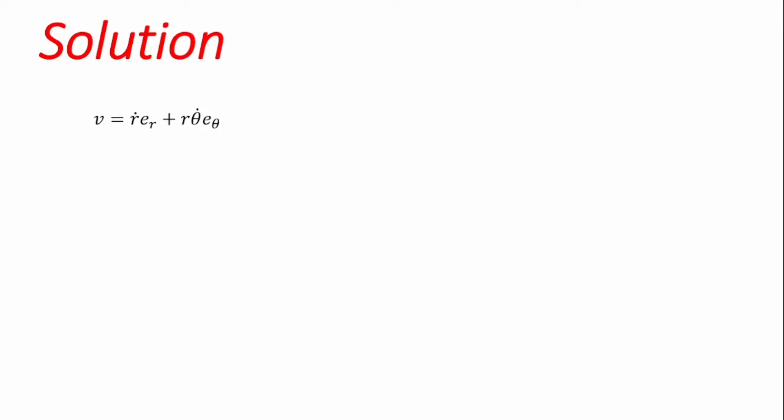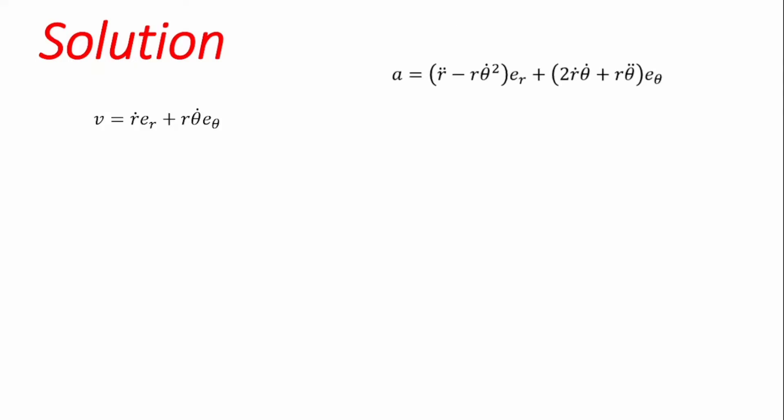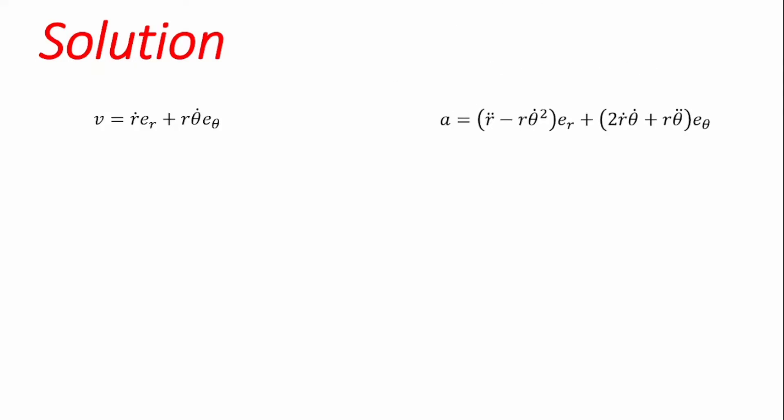We want to work through this problem by first calling forth our equations — the equation for velocity and the equation for acceleration when radial and tangential components are given for curvilinear motion. We need to identify and estimate variables: r, θ̇, ṙ, θ̈, and r̈, which are just the derivatives of the radial and tangential components respectively.